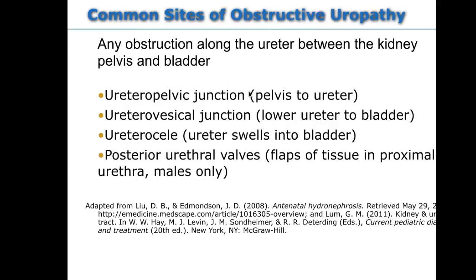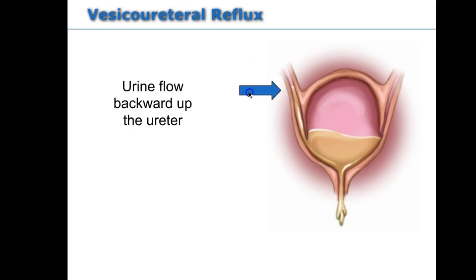Common sites of obstructive uropathy: the ureteropelvic junction (UPJ) is a blockage from the pelvis of the kidney to the ureter. The ureterovesical junction (UVJ) is an obstruction at the lower ureter to the bladder. A ureterocele is when the ureter swells into the bladder making a little bubble. Posterior urethral valves — an extra flap of tissue in the proximal urethra — is only seen in males. Reflux involves urine backing up into the kidney because the one-way valve doesn't close all the way.